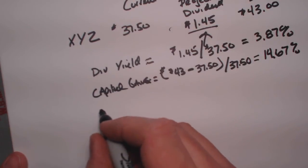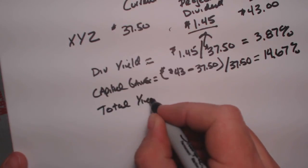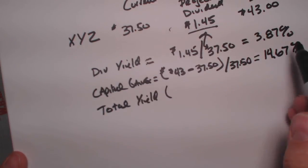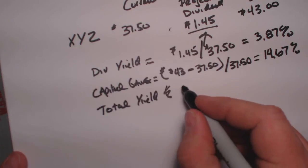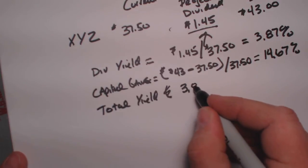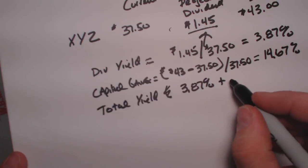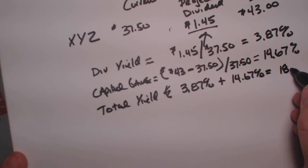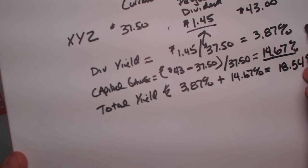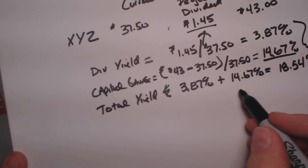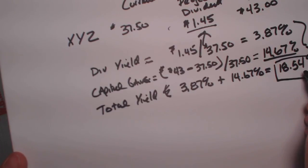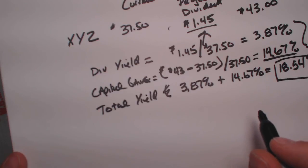Then we look at our total yield. Total is exactly what it is — it's the total of the dividends and the capital gains. So we take 3.87% plus 14.67%, and that gives us 18.54%. Those two added together make the total yield. I hope this explained the dividend and capital gains yield problem.